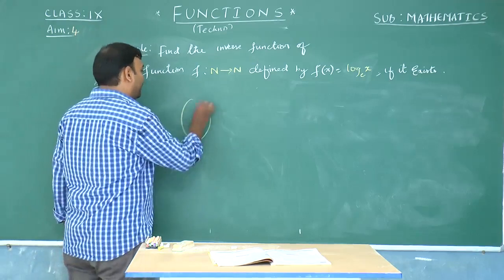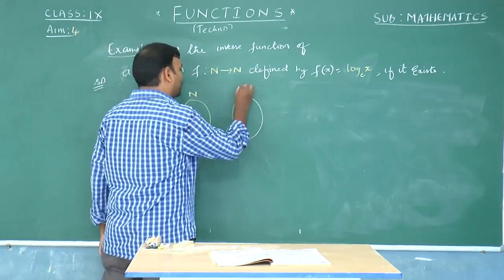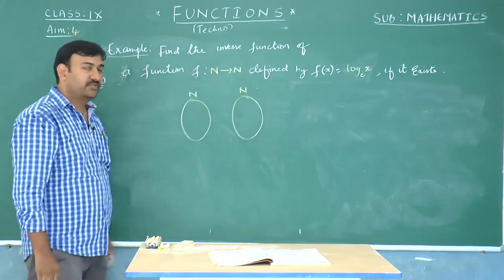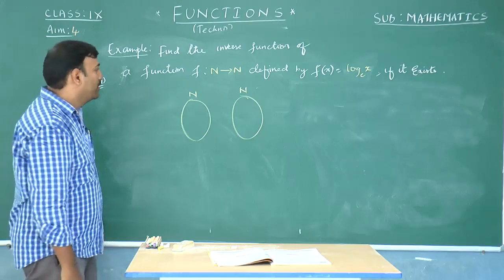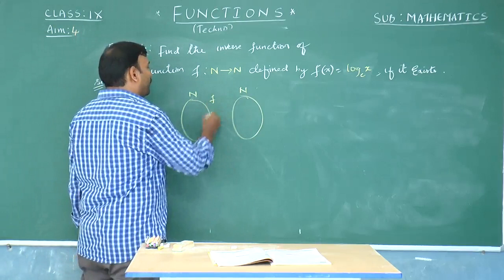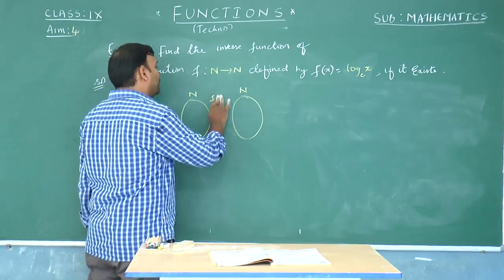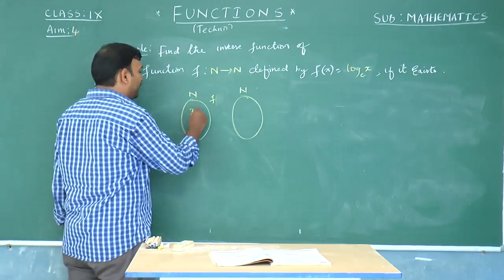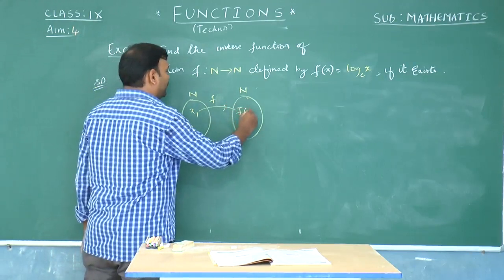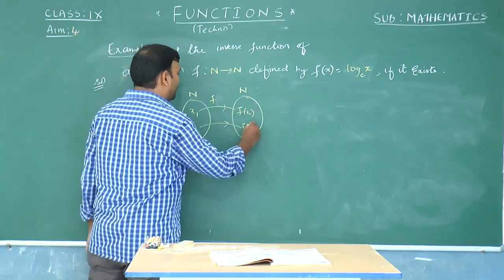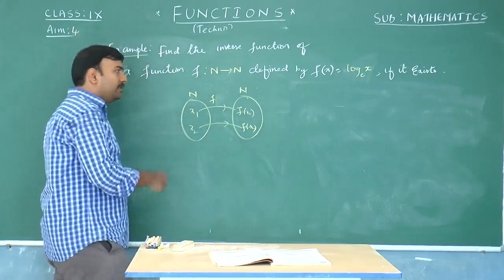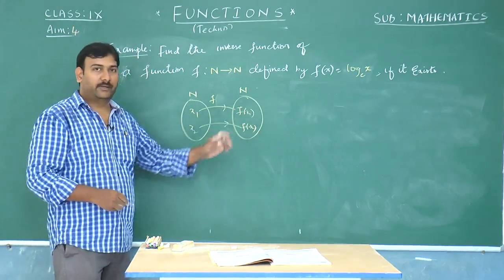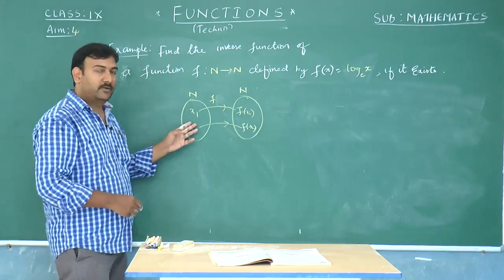As the domain contains natural numbers and the codomain also contains natural numbers, we need to check whether the inverse function exists. First, check whether it is a 1-to-1 function: whatever numbers I take, I need to get different images. If I take different values x1 and x2, f(x1) and f(x2) will give different values. Logarithm values taken from natural numbers give different values, meaning different elements have different images.